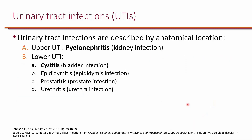In general, urinary tract infections are divided into two categories: upper urinary tract infections, which is primarily pyelonephritis — the infection of the kidneys — and lower urinary tract infections, which include cystitis, epididymitis, prostatitis, and urethritis. The bottom three are specifically in men, while cystitis can happen in both men and women.